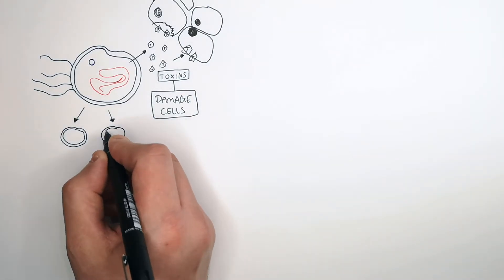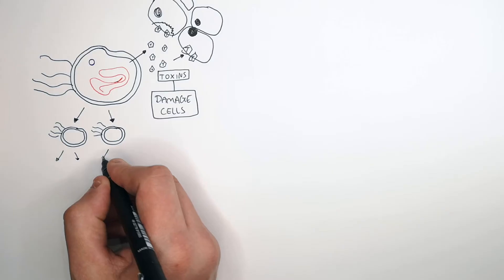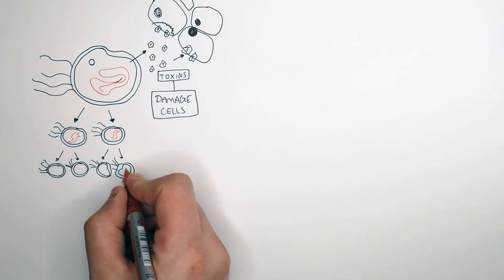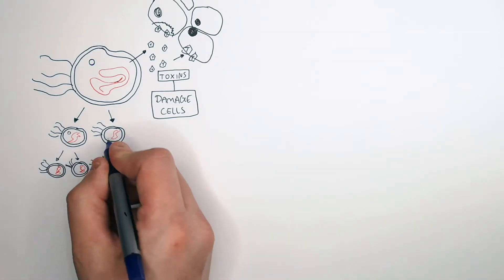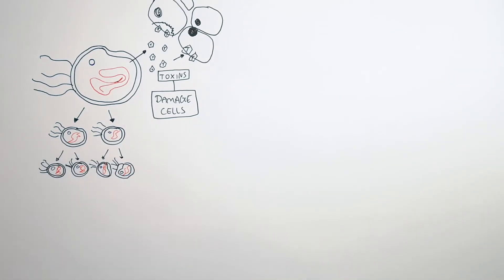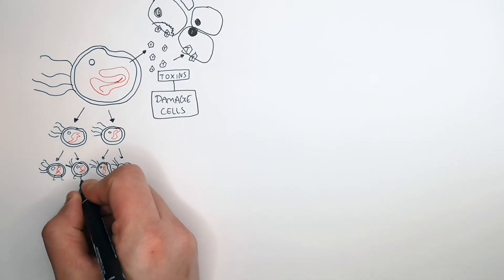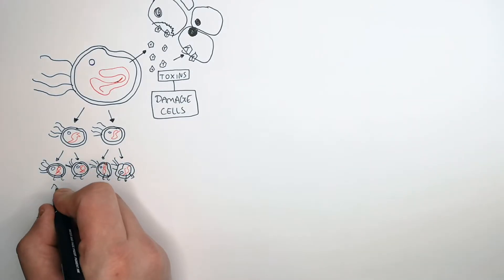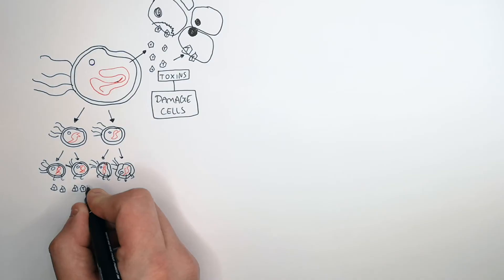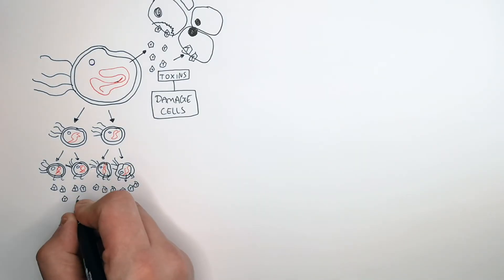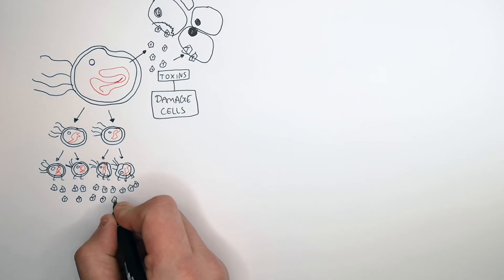Bacteria reproduce incredibly quickly by asexual reproduction. It is similar to mitosis but we call it binary fission. So bacteria divide and replicate very quickly by asexual reproduction. So the more pathogenic bacteria there are in your body, the more toxins they're going to produce. The more toxins, the more damage it does. The more damage, the higher chance of a very serious illness or potentially even death.